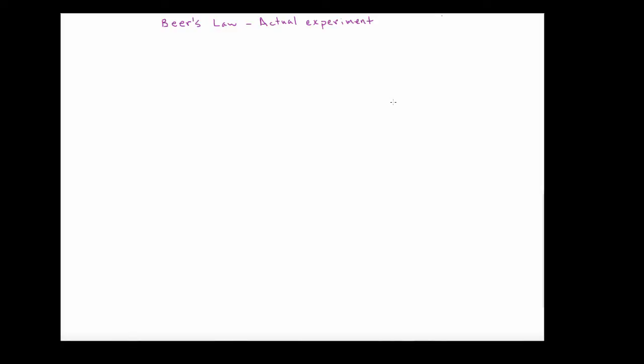Welcome to the ChemDoctor. This is the fourth video in the series on Beer's Law, and what we're going to do here is simulate an actual experiment. The data we're going to look at was acquired by me doing the actual experiment, and now I'm going to explain how I did it and then look at how I analyzed my own data. Let's go ahead and get started.